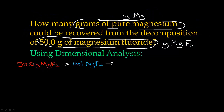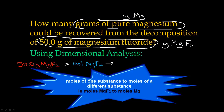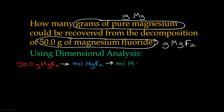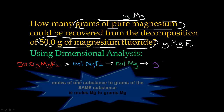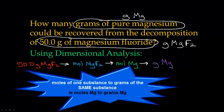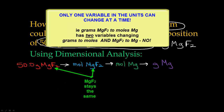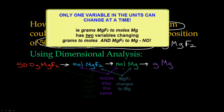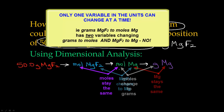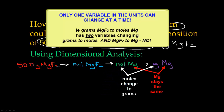After we go to moles of magnesium fluoride, then we need to go to moles of magnesium, because that's what we're trying to get to. And lastly, once we're at moles of magnesium, then we can go to grams of magnesium. We go from grams of magnesium fluoride to moles of magnesium fluoride — always go to moles of the same compound. Once we switch compounds, we can go from moles to moles, and then from moles to something else like grams.